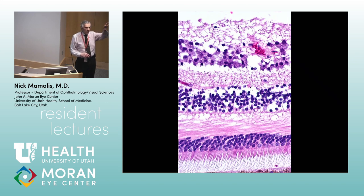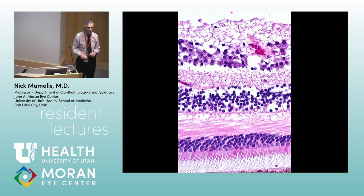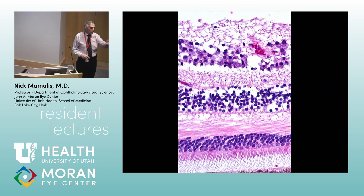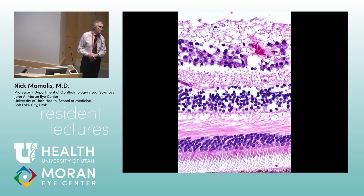The interconnections between horizontal and amacrine cells are amazing. Helga Kolb, one of our PhDs here now emeritus, won the Proctor Prize for her work on this — she spent her career looking at how these are all interconnected and produced amazing EM work. Very, very complex. Mueller cells: what the heck do they do?